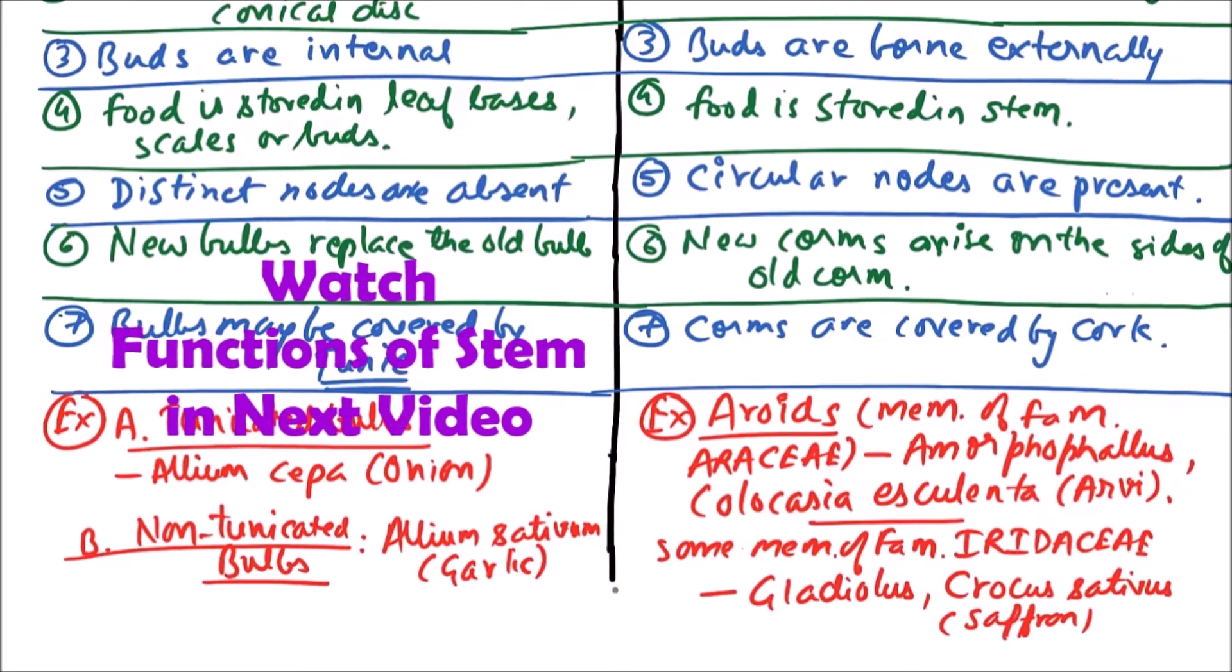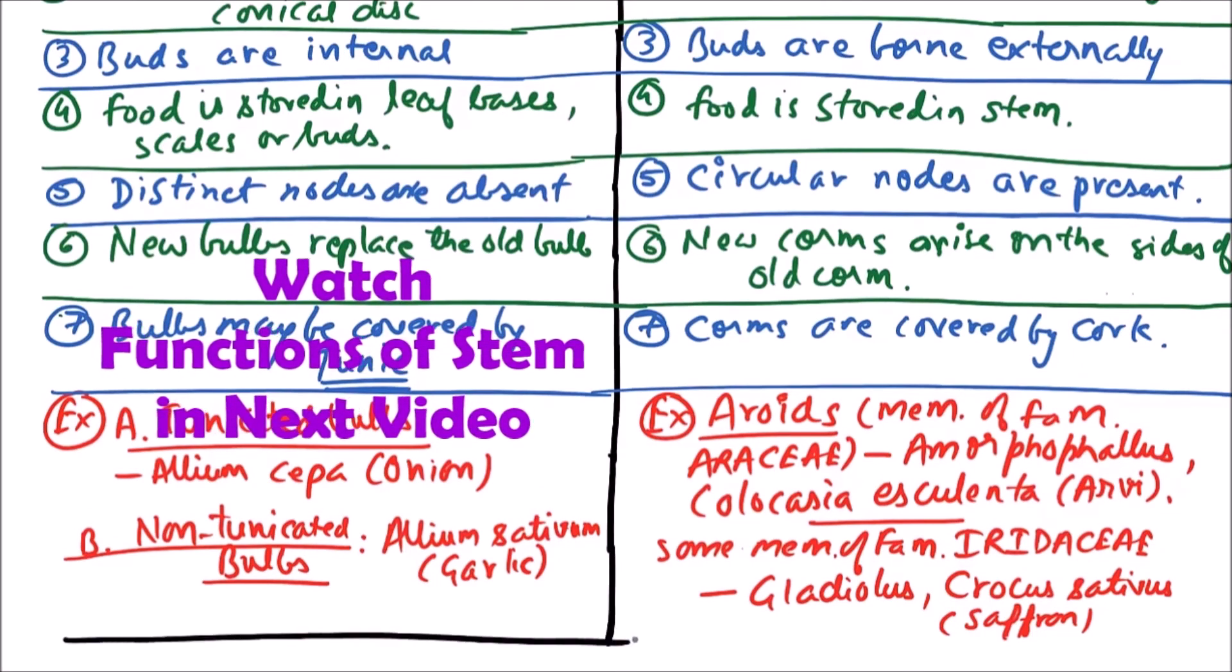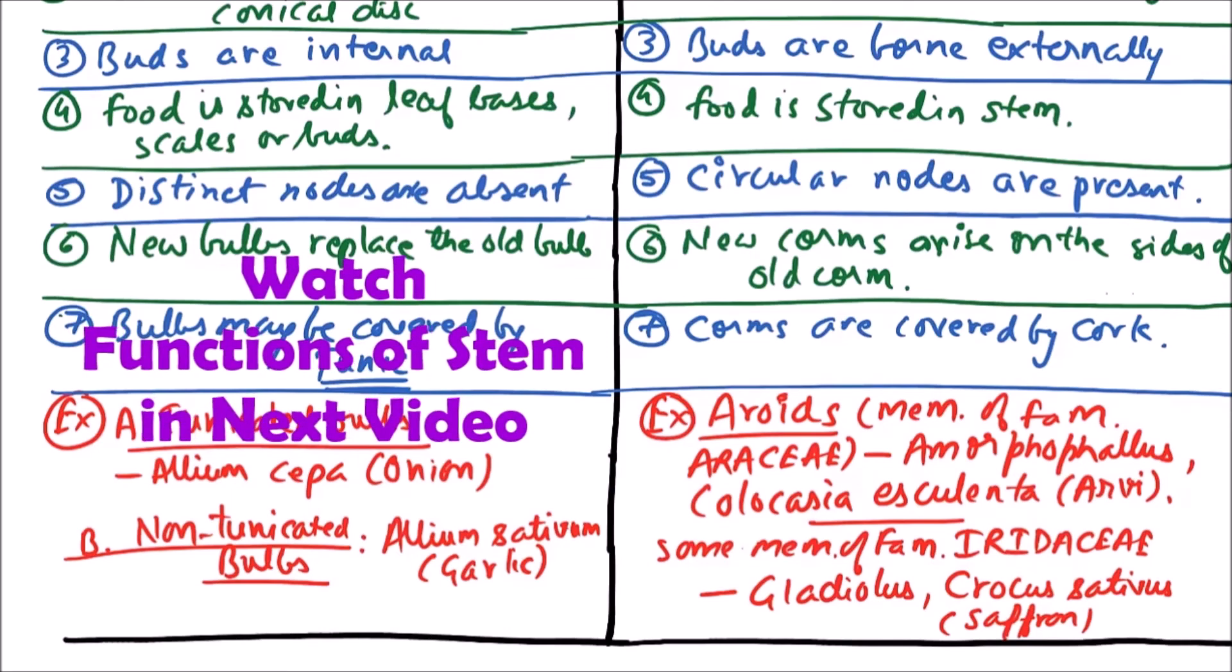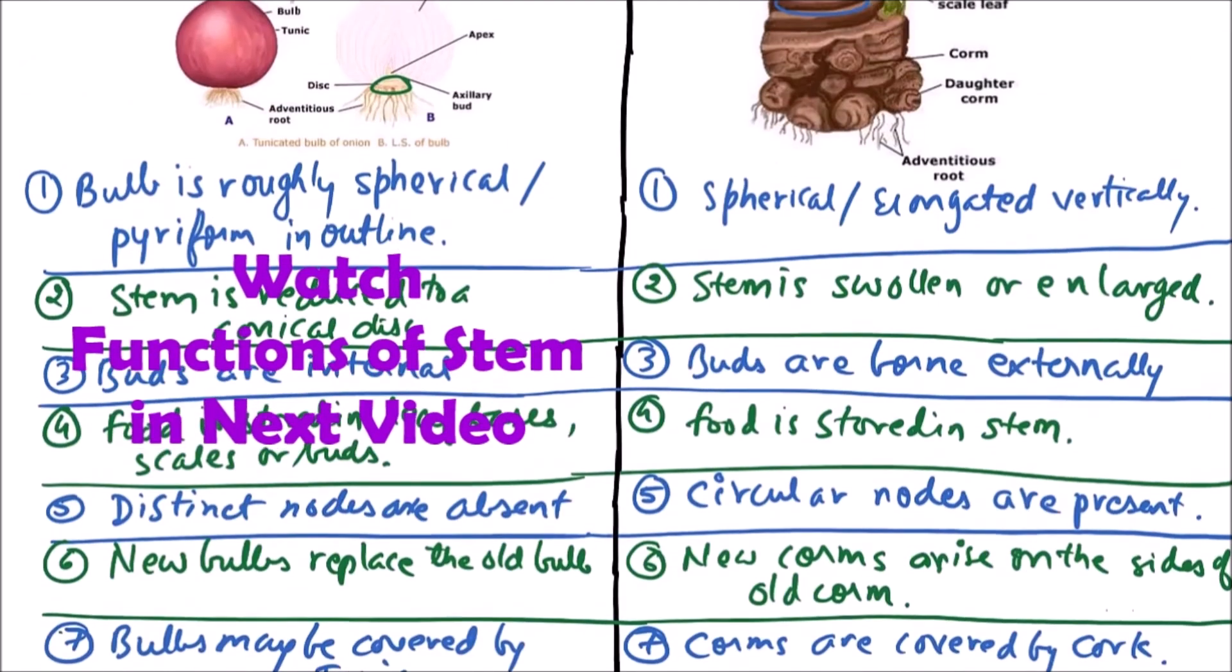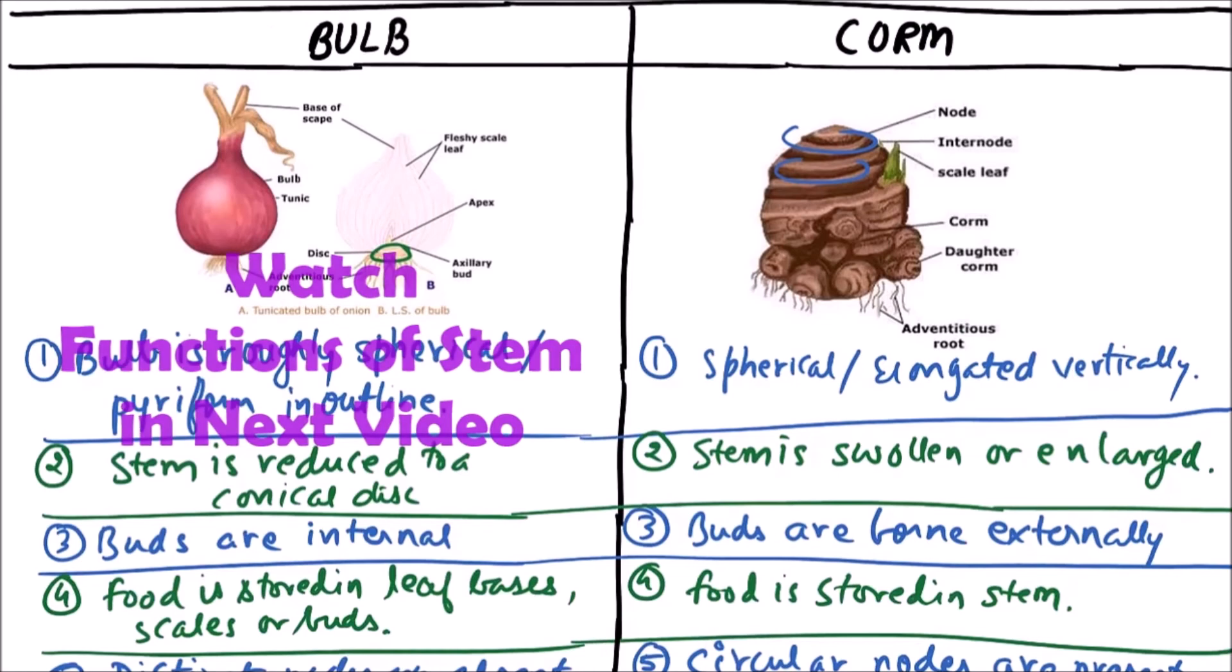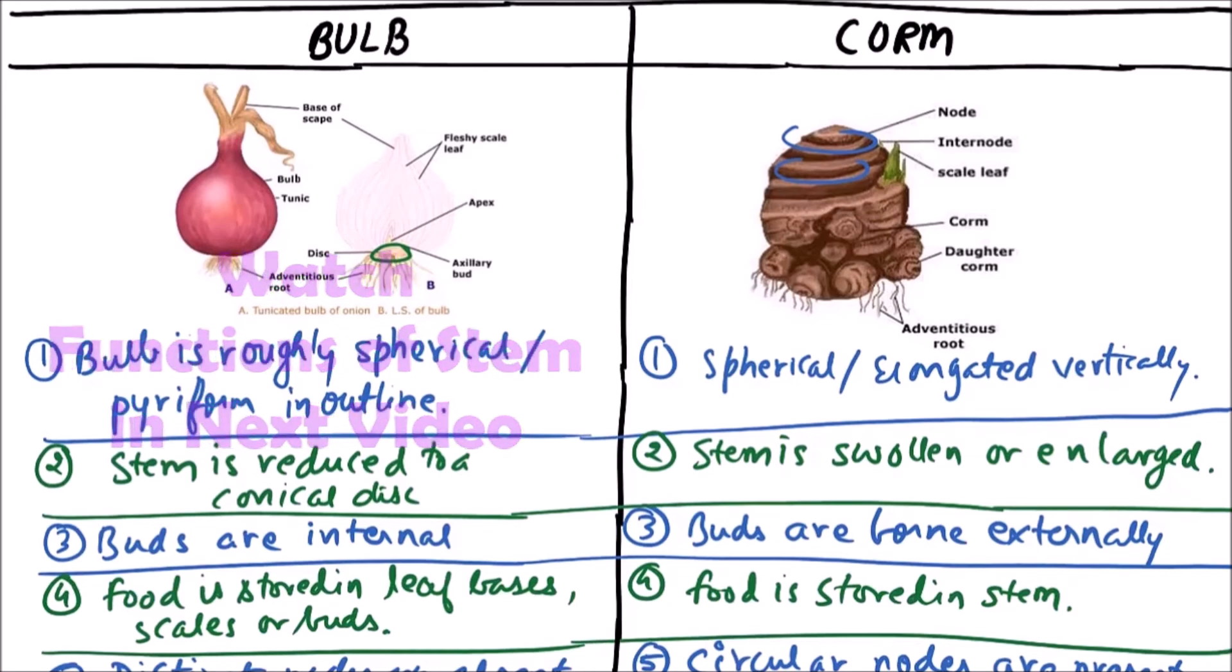So these are the differences and examples of bulbs and corms. Thanks for watching this video.